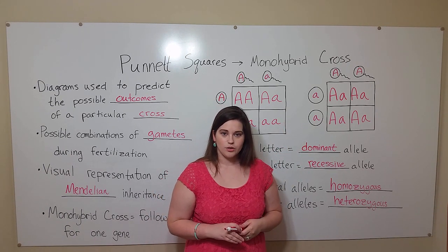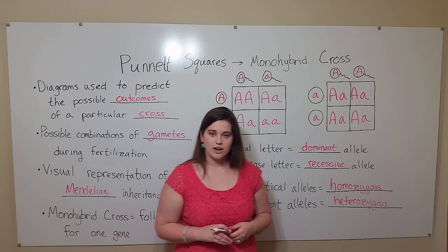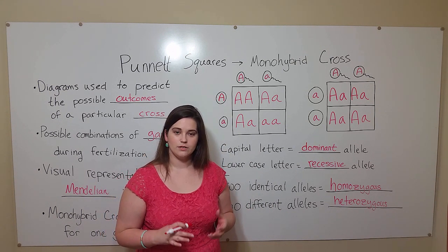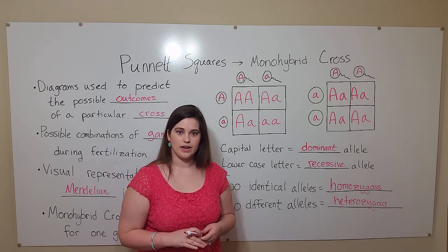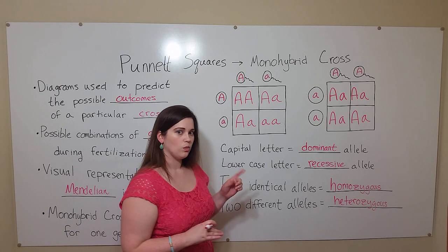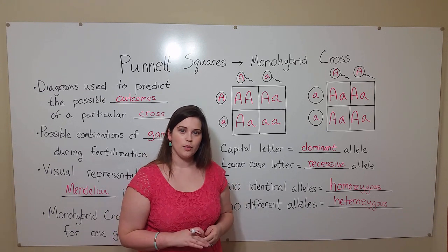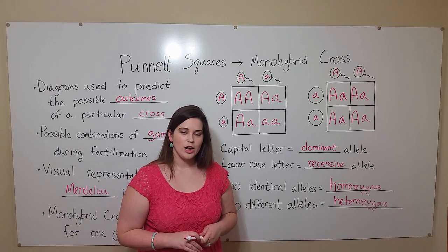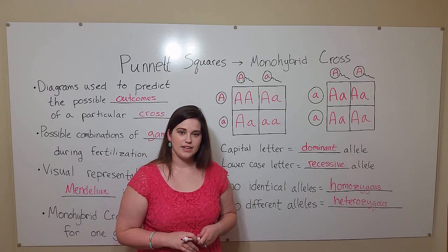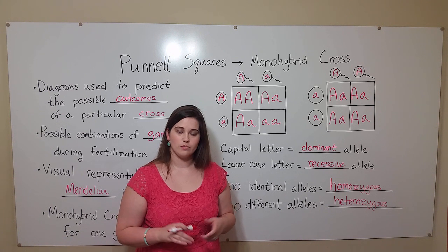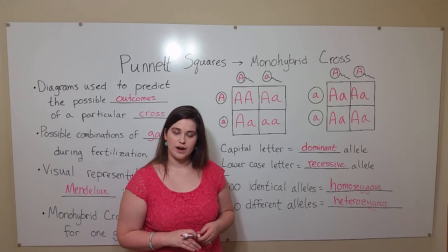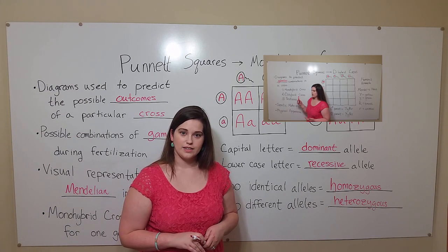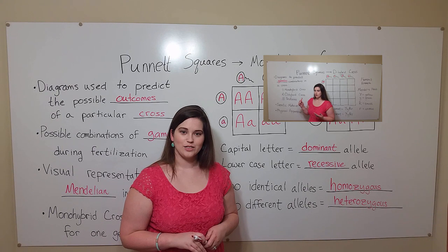And that is how you use Punnett squares to look at the possible combinations for the offspring when looking at one gene — monohybrid crosses. If you're interested in learning more about Punnett squares, see my other video on dihybrid crosses. Thanks for watching!